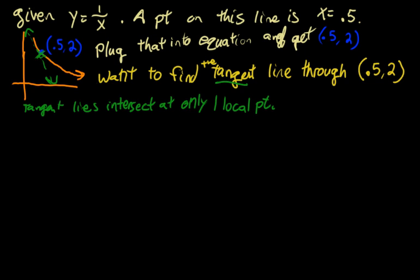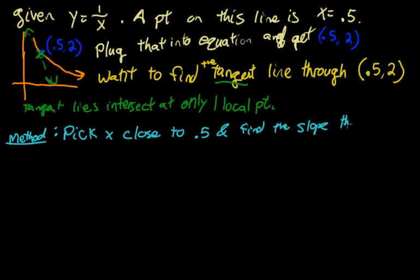And the method we use for this isn't going to be the best method, but it's going to be one to help us learn more about limits. So the method: we want to pick an x that is close to 0.5 and then we want to find the slope through that point and our given point (0.5, 2).